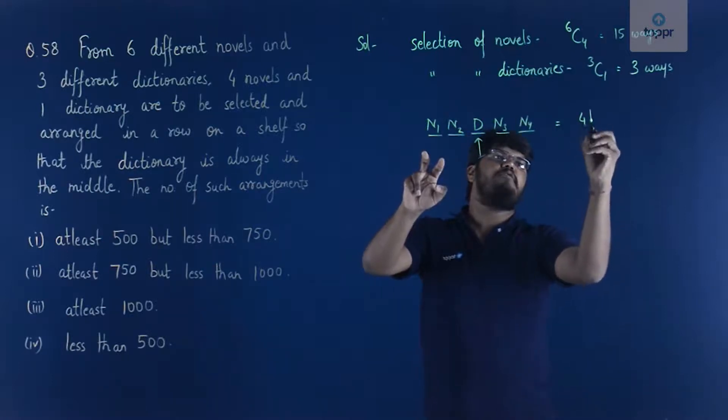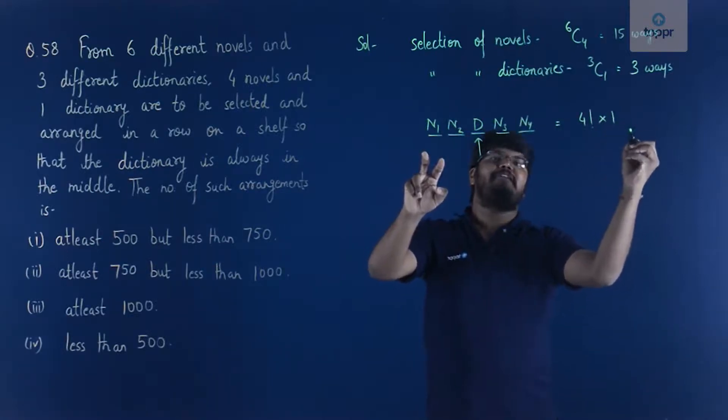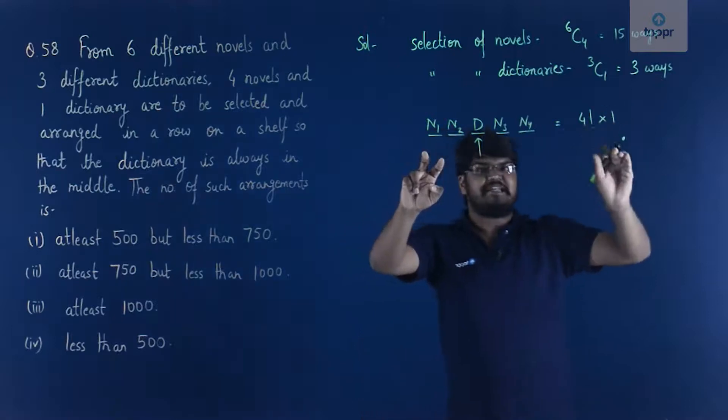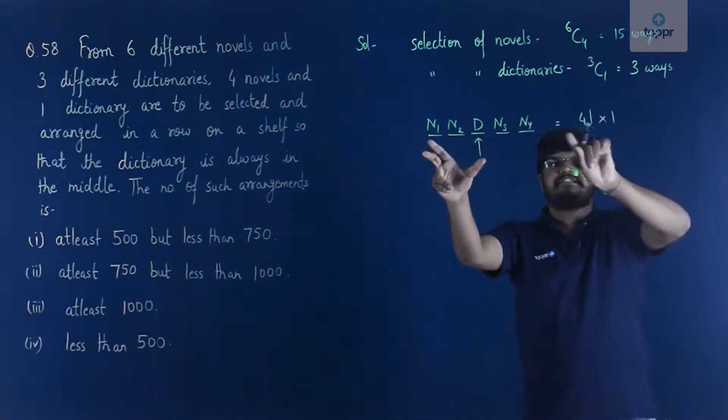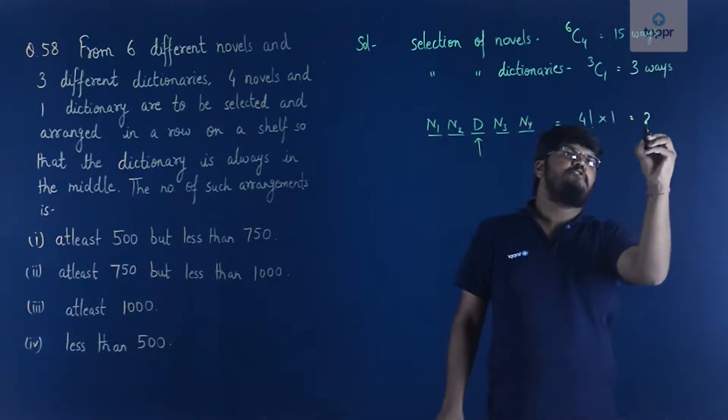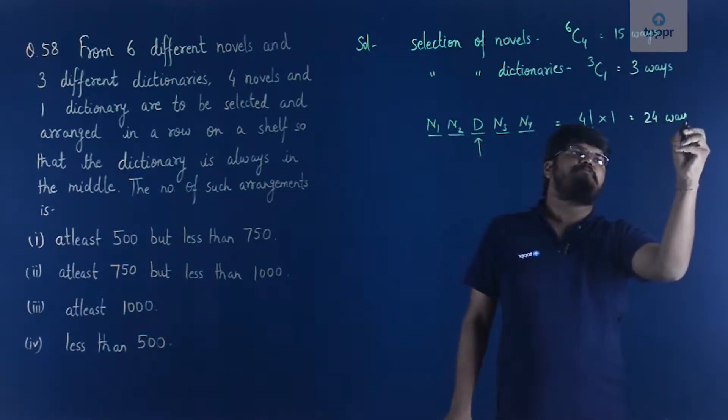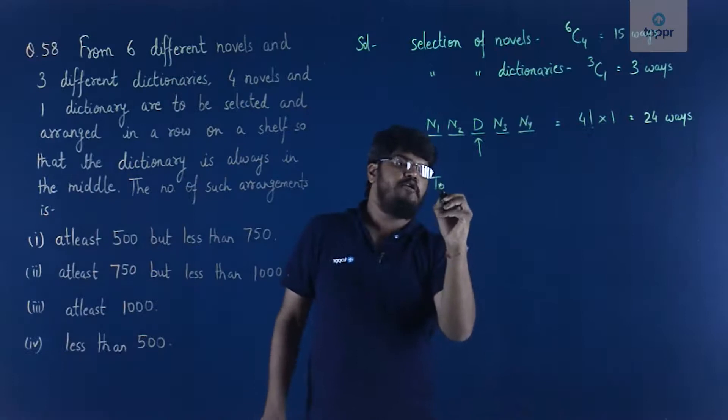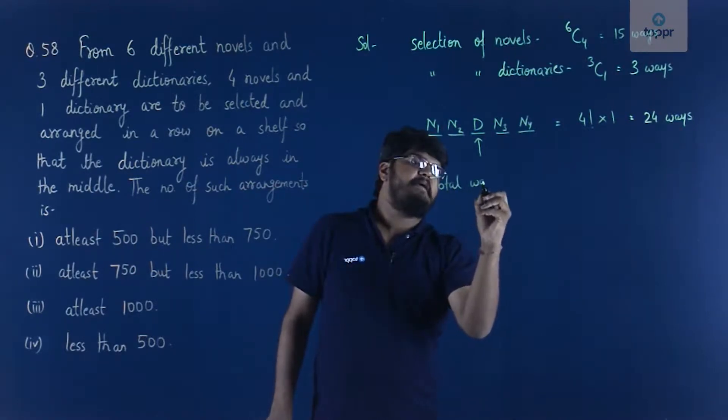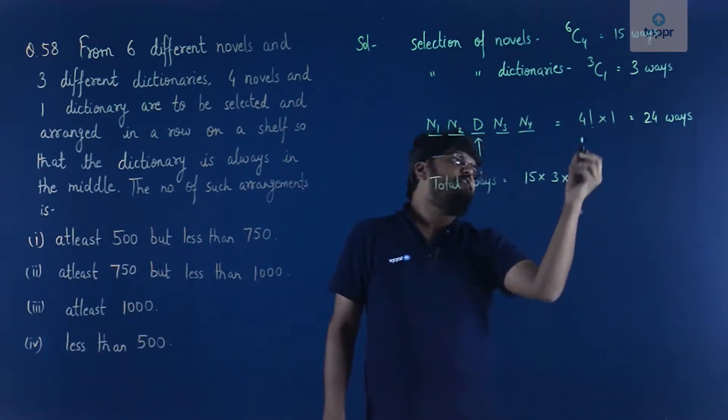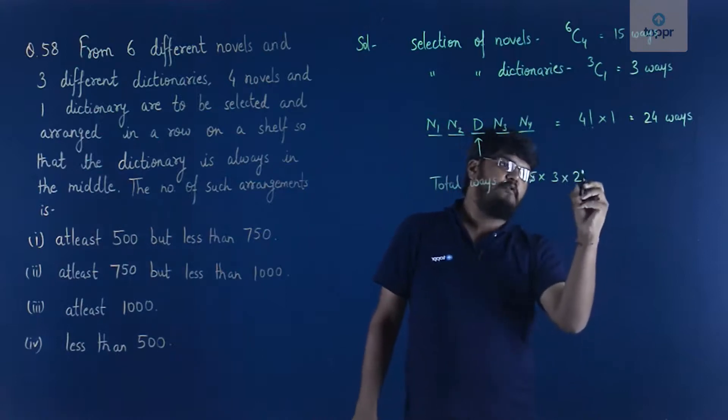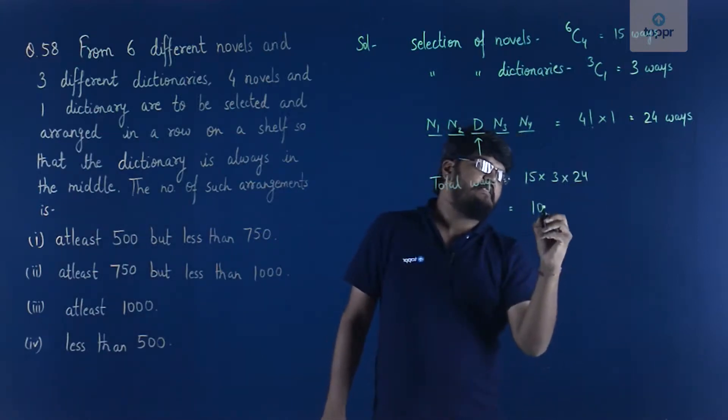So, you can say that this would be equal to 4 factorial into one way. Why into one? Because the dictionary can be arranged in only one way but the novels can be arranged in 4 factorial ways which is equal to 24 ways. Thus, total ways is actually equal to 6C4 which is 15 into 3C1 which is 3 into 4 factorial into 1 which is 24, which will be equivalent to 1080.